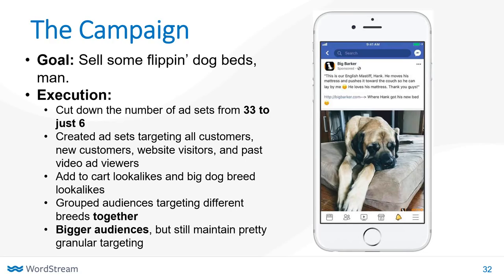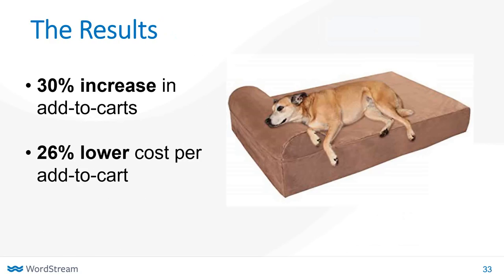How did consolidating their campaign structure work out for Big Barker? They got a 30% increase in add-to-carts, a 26% lower cost per add-to-cart, and a whole bunch of happy pups who got fuzzy beds to lay on.